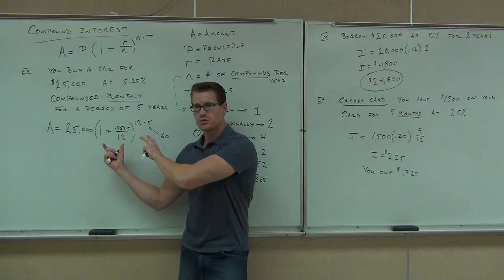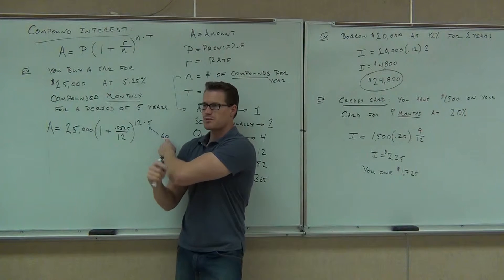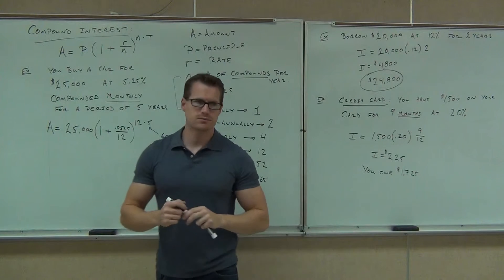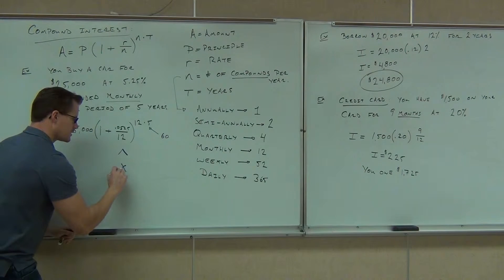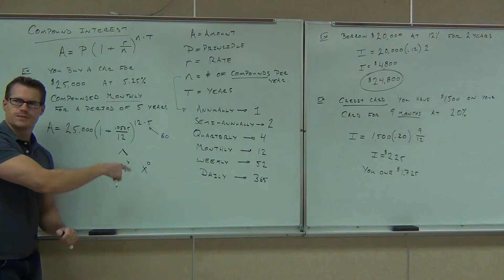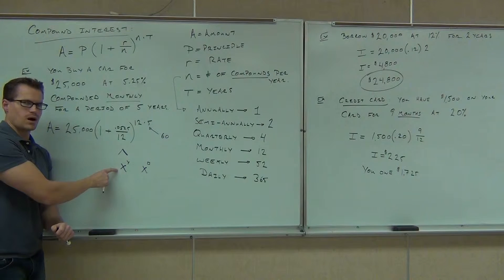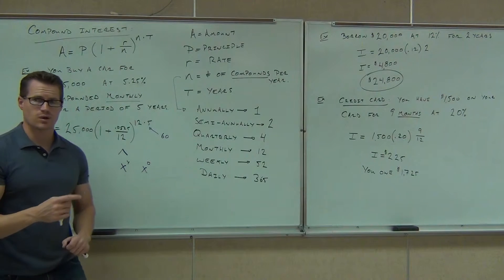Now you have to do to the exponent. So take to the 60th power. The to the button looks like this, or looks like this, or looks like this. It's one of those on your calculator. It's either a caret, or x to the y. Not square. You're not squaring it.